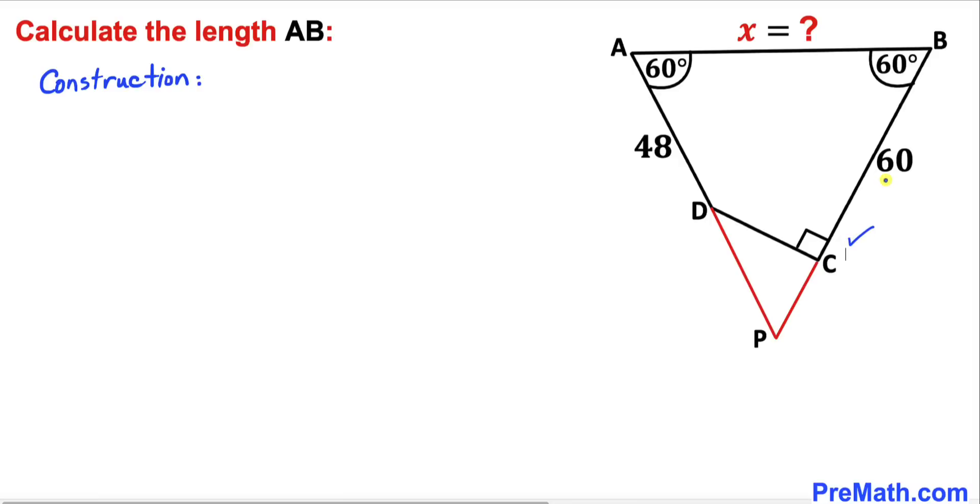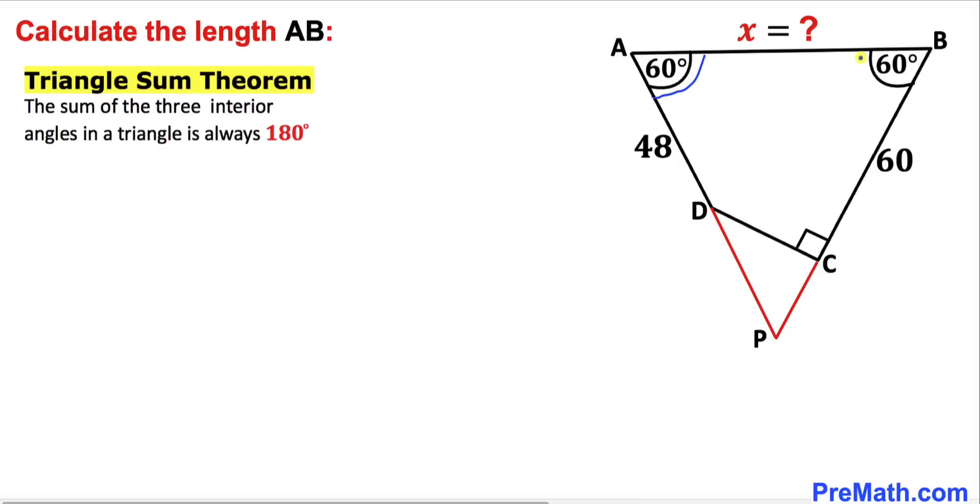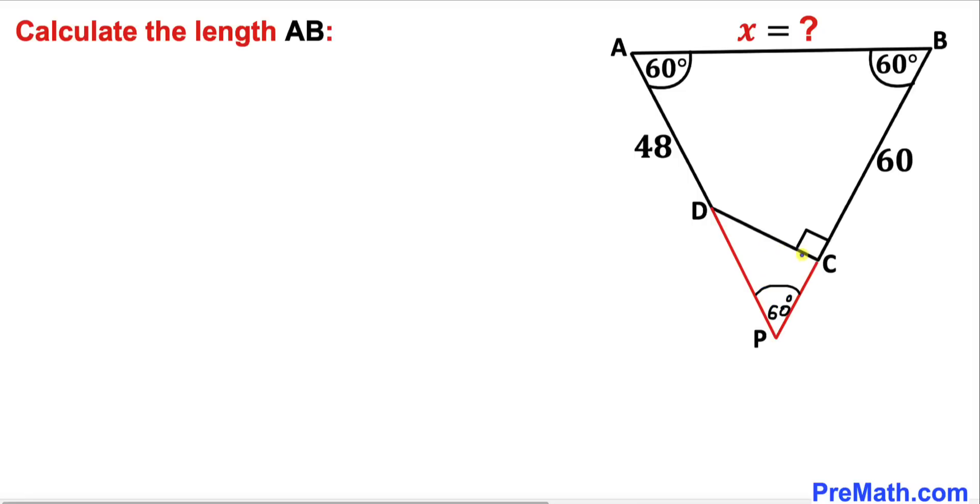Here's our nicer looking diagram. Let's recall the Triangle Sum Theorem. According to this theorem, the sum of all three angles must equal 180 degrees. Therefore, we conclude that this angle must be 60 degrees, and this angle is 90 degrees.